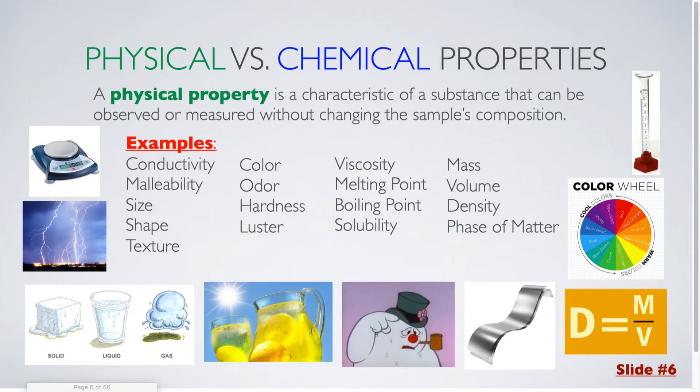The next thing we're going to be covering is physical versus chemical properties. A physical property is a characteristic of a substance that can be observed or measured without changing the sample's composition. And here I have a whole bunch of different examples of things that would be physical properties. First, conductivity. For this, we could be talking about either heat or electricity. You have malleability, which is the ability of a substance to be easily bent or shaped. The size, shape, or texture of an object would all be examples of physical properties.